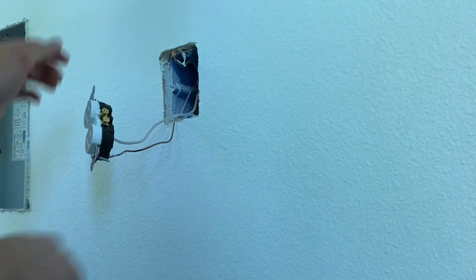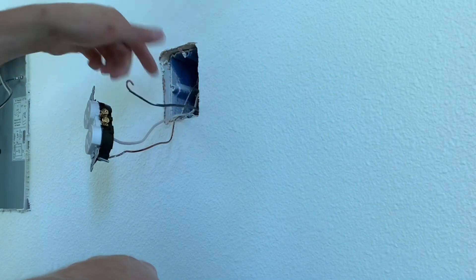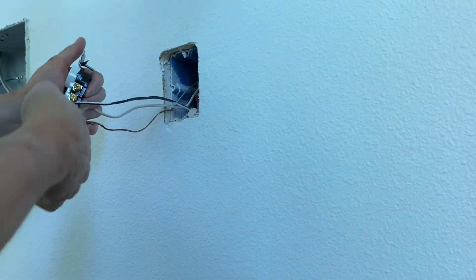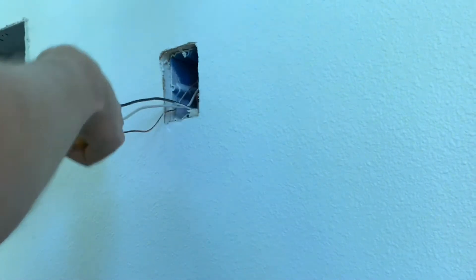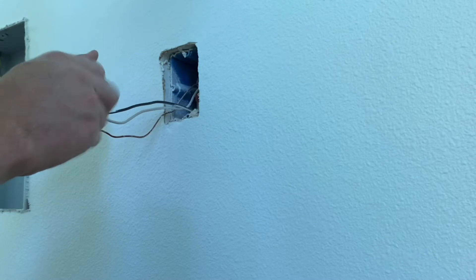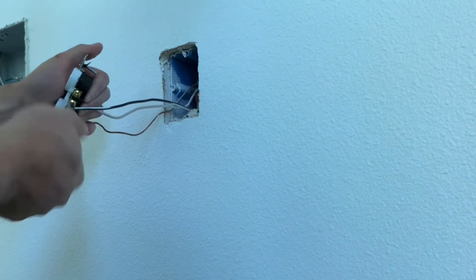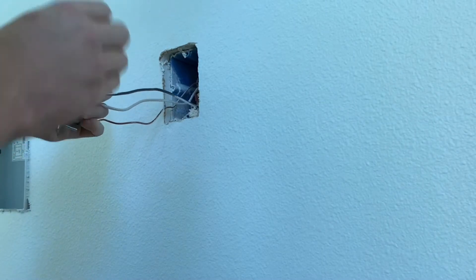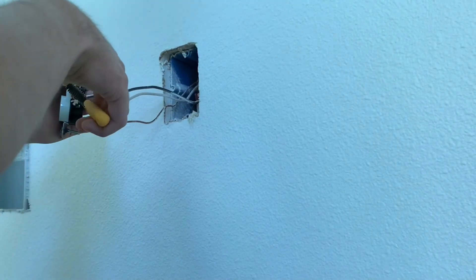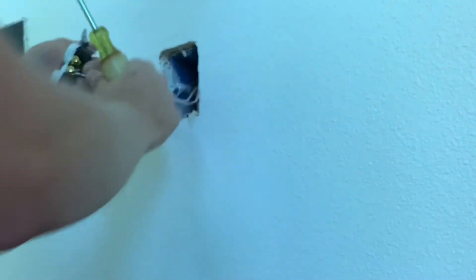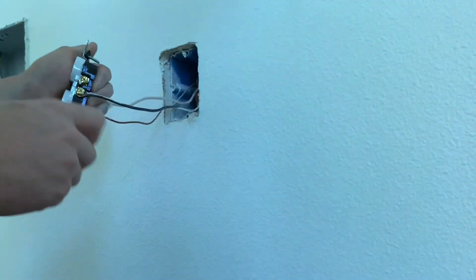Then flip that over and you're going to want to take your hot or your black wire. Could also be a red wire, just depends on your color, but most of the time it's going to be black. Then you're going to want to tighten this down again, hook it to the right so when you tighten this down it doesn't back out. These loops are a little bit big for this screw right here, so you can tighten that down a little bit, pull it tight.